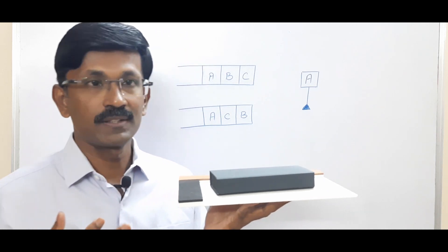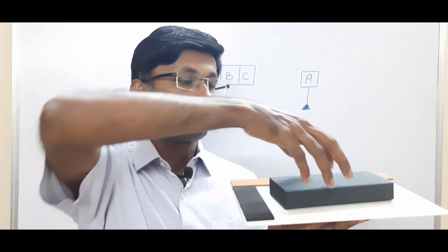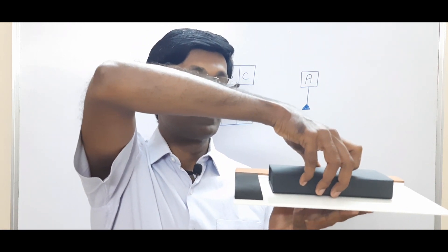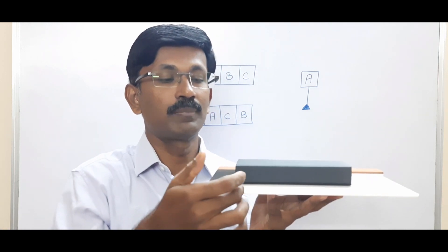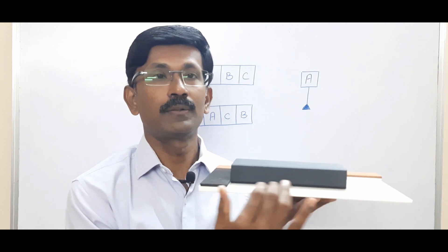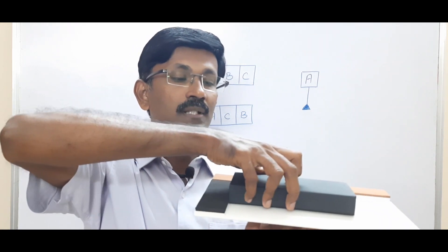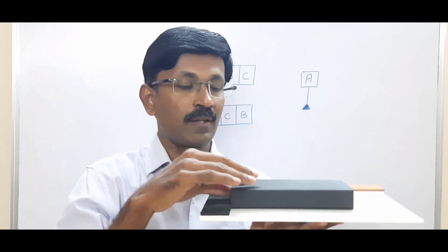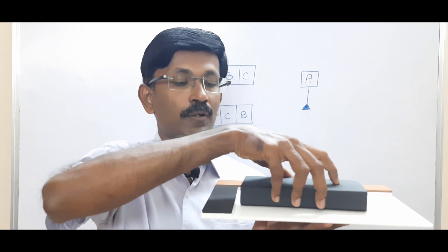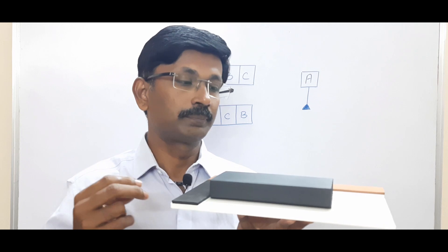Now, out of six we have constrained three degrees of freedom — three more are pending. What we do is we bring this component and rest it along the next perpendicular plane. This plane is perpendicular to the first plane. Now it cannot move in this direction nor rotate in this direction. So when we rest the part onto the second datum plane, it will constrain two degrees of freedom.